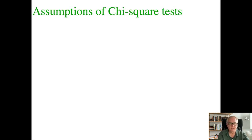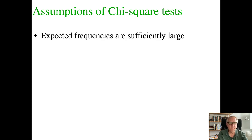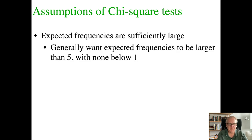Before finishing chi-square, I want to mention some important assumptions. First, the expected frequencies must be sufficiently large. Generally, you want the expected value in each cell to be greater than 5. If you have a 2×3 table, none of those expectancies should be below 1, and most should be larger than 5. Having an expectancy below 1 would mean you've violated this assumption and shouldn't use the chi-square test for independence.